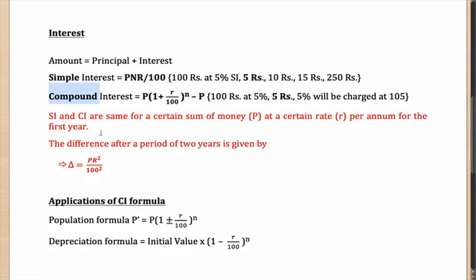There are a couple of ideas related to compound interest such as the population formula. Let's say the population of a particular country or place is P right now and it changes at the rate of R per year. Then what will be the population N years later? Well, same idea as compound interest: P into 1 plus R by 100 to the power N.